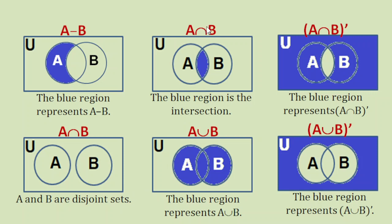This illustration is A intersection B — the blue region is the intersection. On the other hand, A intersection B prime is represented by the other part of that region. This one illustrates A union B — the blue region represents A union B. On the other hand, we have the union of A and B prime, represented by the blue part, which is the other part of the region belonging to A union B.